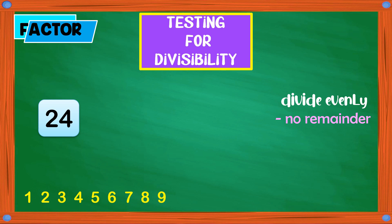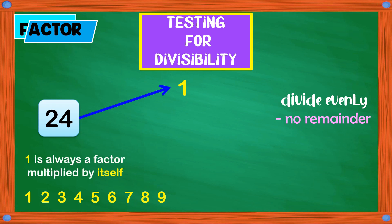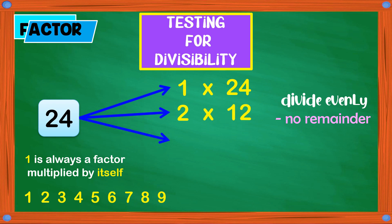First, write down the first 9 elements of the set of counting numbers: 1, 2, 3, 4, 5, 6, 7, 8, 9. Let's start with 1. 1 is always a factor, so 1 times 24 is 24. 24 is divisible by 2: 2 times 12 is 24. 24 is divisible by 3: 3 times 8 is 24. 24 is divisible by 4: 4 times 6 is 24.